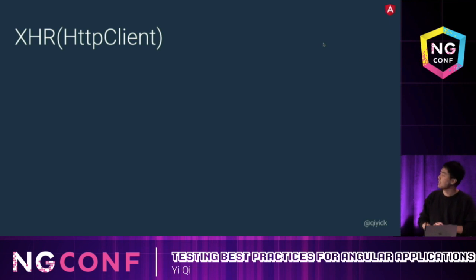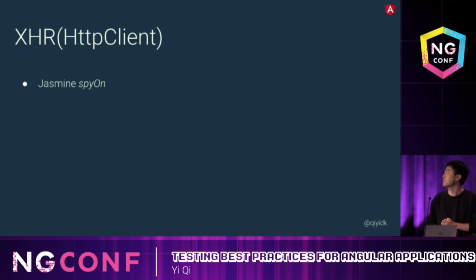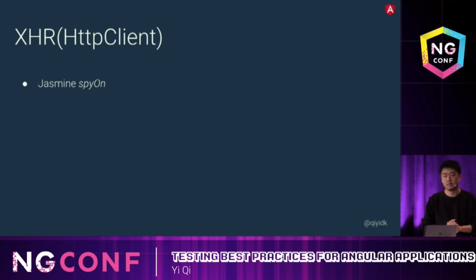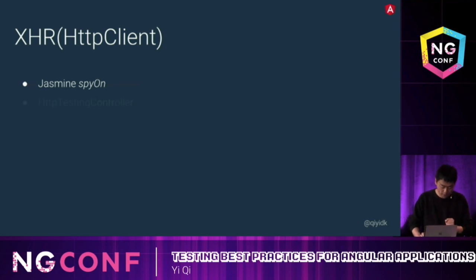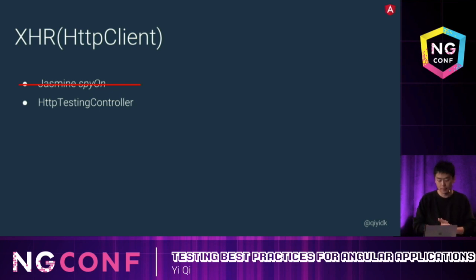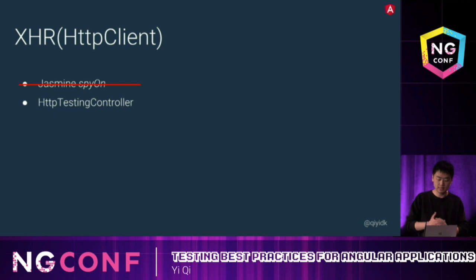The last async topic is XHR. One possible solution is to use Jasmine Spy — spy on XHR and replace it with a mock response. But if we do that, we can't test the actual HTTP request because it's been replaced. Instead, Angular provides a helper called HttpTestingController. When our test sends an actual HTTP request, it's intercepted by the testing controller and responded to with a mock response.